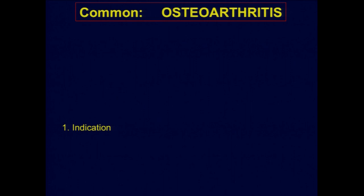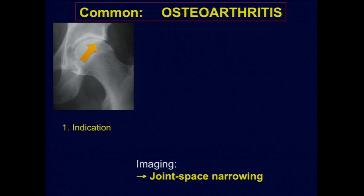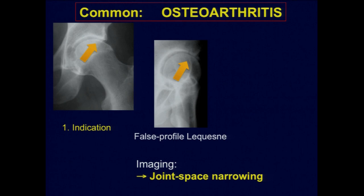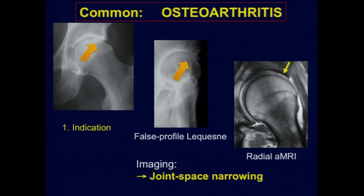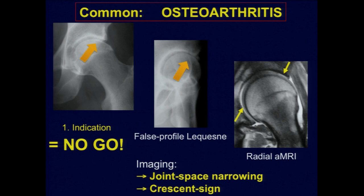Osteoarthritis — I think one key point is the indication: bad indication, bad result. If you see on your x-ray pictures a lateral decrease of the joint space, and on false profile you see the joint space is significantly more decreased, and on the arthro-MRI you see the head migrating into a defect, opening the joint posteriorly — what I call the crescent sign — this is clearly a no-go for me. The hip is no more congruent; you can do what you want, it will give a bad result.